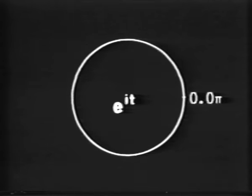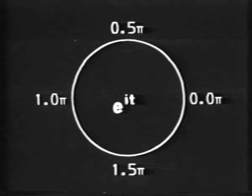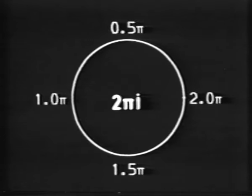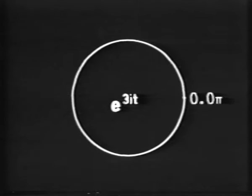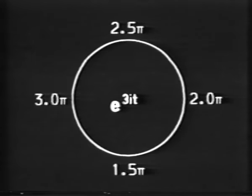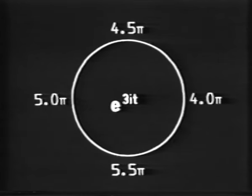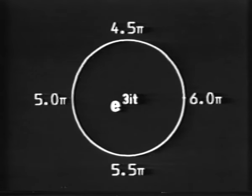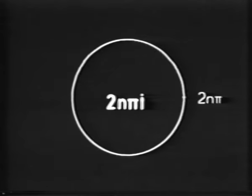Let's see that again. Because we chose e^(it), the point moves with constant speed. The integral of 1/z along this arc is 2πi. If we now take e^(3it) as our parametrization, as t goes from 0 to 2π the point moves around the circle three times, again with constant speed. Since we've gone around three times, the value of the integral is 6πi. With z = e^(nit) it would be 2nπi.